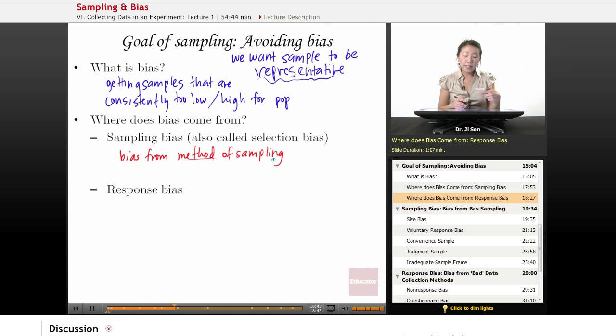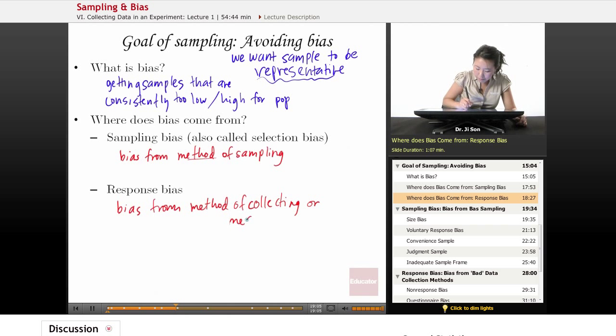So this would be because somehow the way that you're collecting the data, or somehow something is going wrong in the way that the data is being measured. So bias from method of collecting or measuring your cases or variables.